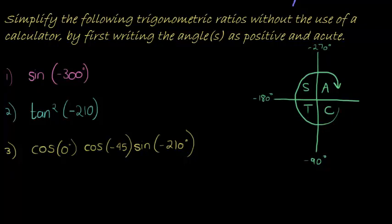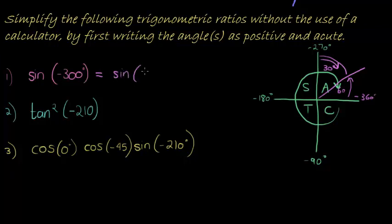Negative 300 degrees — where would that be? It's smaller than negative 270 and yet larger than negative 360, so it's somewhere in here. We know that from 270, that angle must be 30 degrees, so this angle must be 60 degrees. This is negative 300, and minus another 60 will take me to negative 360. So the angle I make with the x-axis is 60 degrees.